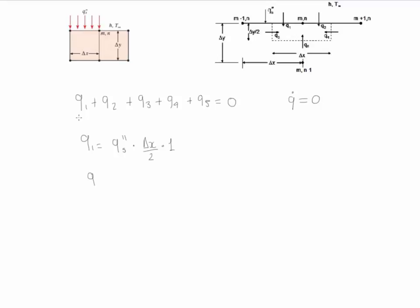Q2 is due to convection so we have H. It goes from the fluid to the node and the area that it crosses is delta X divided by 2 times 1.